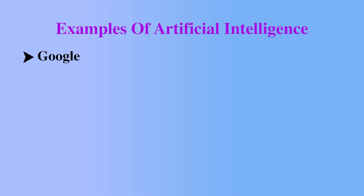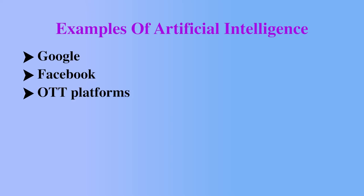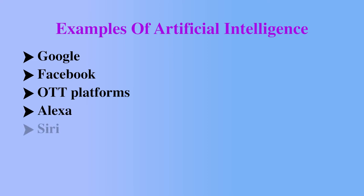Can you identify examples of AI around you in daily life? Yes, ma'am. Some are Google, Facebook, OTT platforms, Alexa, Siri, Google Assistant, and self-driving cars. Very good.